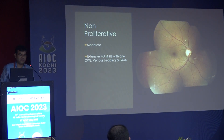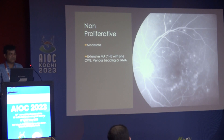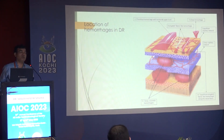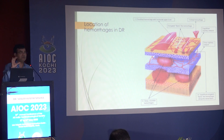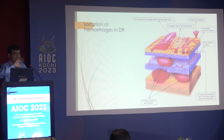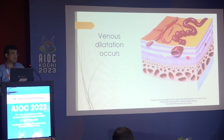Extensive microaneurysms and hemorrhages — the location of diabetic retinopathy hemorrhages could be vitreous hemorrhage, pre-retinal hemorrhage, superficial hemorrhages, or deep hemorrhages. Superficial hemorrhages happen in the superficial capillary network and are flame-shaped — they take the shape of the nerve fiber layer. Deep hemorrhages are in the nuclear layers. Cotton wool spots develop because of ischemia in the superficial and deeper capillary network. Venous dilatation and beading are also part of the vascular changes in retinopathy.